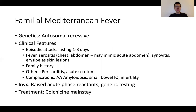Investigations include raised acute phase reactants and genetic testing. Colchicine is the mainstay of treatment. So in a patient with multiple abdominal scars and surgeries with non-revealing findings, familial Mediterranean fever is a condition to consider.